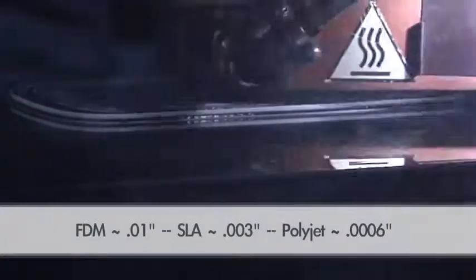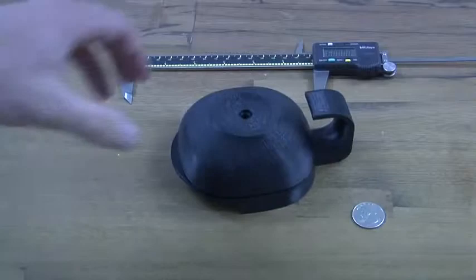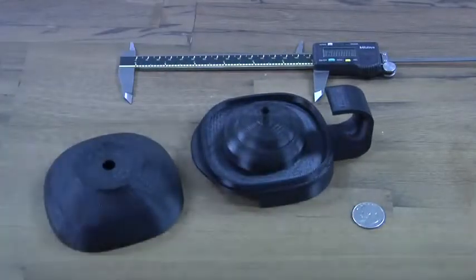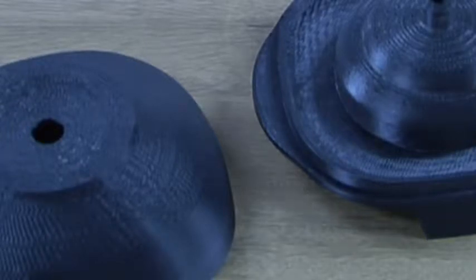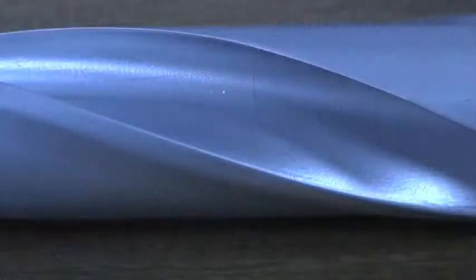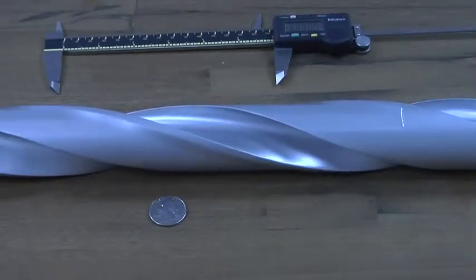Compare that to stereolithography at three thousandths of an inch, or polyjet at one half of one thousandth. On the Z axis, you'll see lower resolution, resulting in stair-stepping. If you want a very aesthetically clean-looking part using FDM, it's going to require bondo, sanding, and extra finishing work to get it to look as pristine as a different technology might allow.